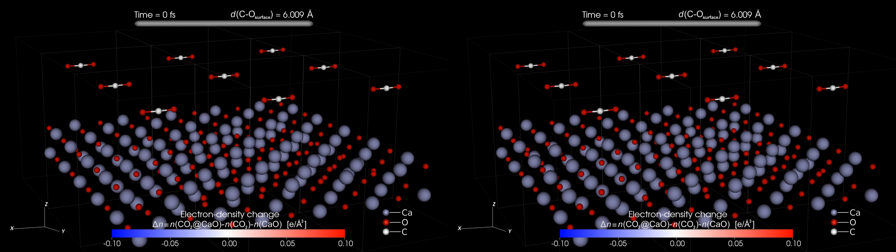Calcium atoms in the surface are represented by gray spheres, the oxygen atoms by red spheres. The carbon dioxide or CO2 molecule is shown as a white sphere, the carbon atom, between two red spheres, the oxygen atoms.